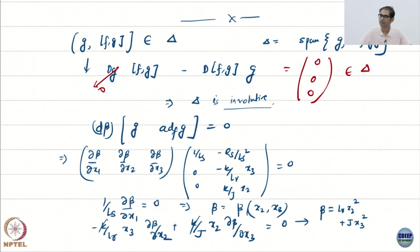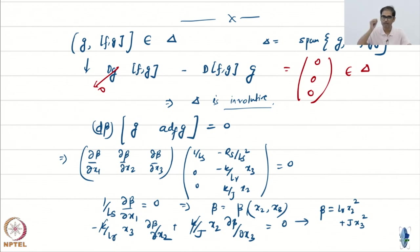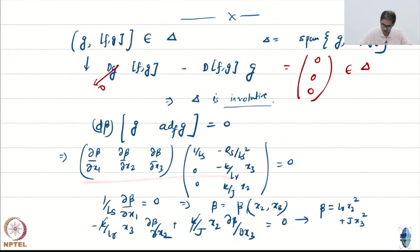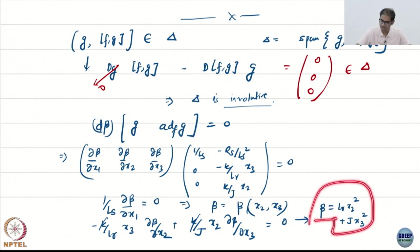Once we had these two conditions, we know the system is fully feedback linearizable. Then all we have to do is use the equality which says that dβ — whatever is your output, since we are trying to figure out the correct output with respect to which the system is feedback linearizable — dβ applied to the vectors of the distribution is exactly 0. This is just evaluating partial derivatives, giving you equations like: partial of β with respect to x₁ is 0, so there is no dependence on x₁, only on x₂ and x₃.